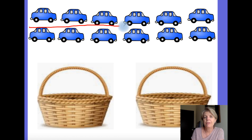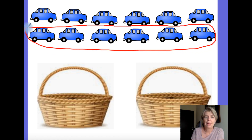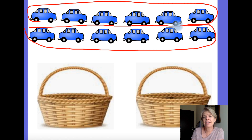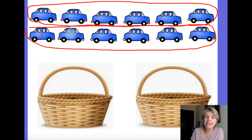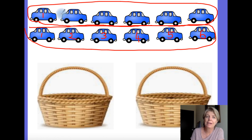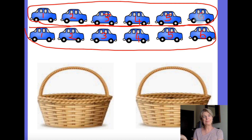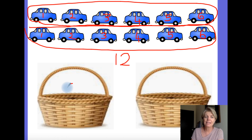Here's one row and here's another one. Are they the same size? They are, aren't they? So how many cars in each? One, two, three, four, five, six — six for me. One, two, three, four, five, six — six for you. Half of twelve is six.